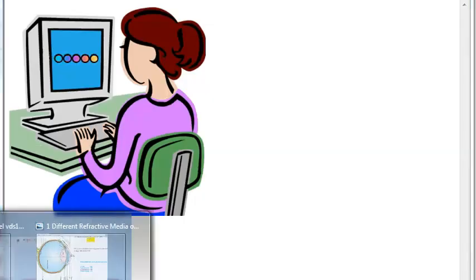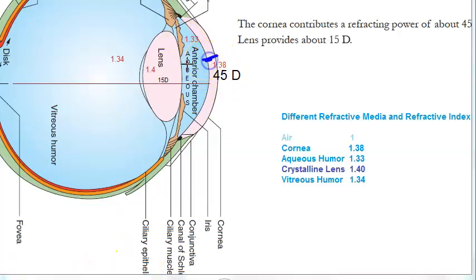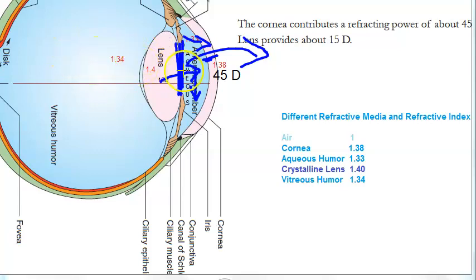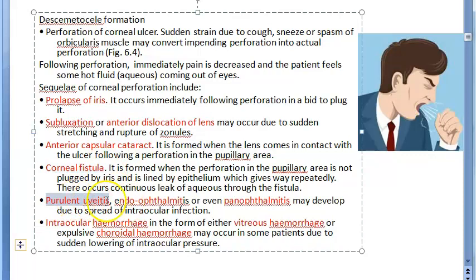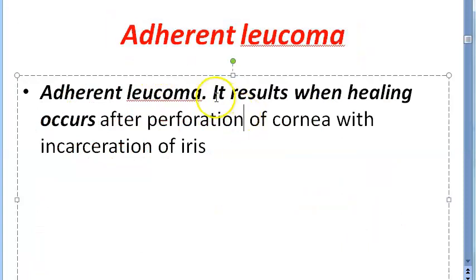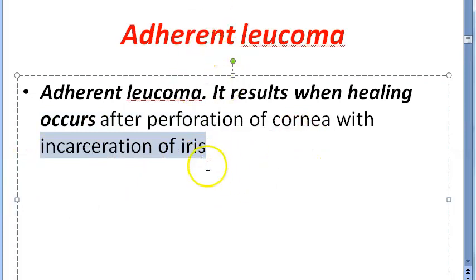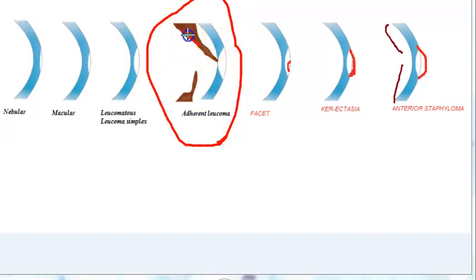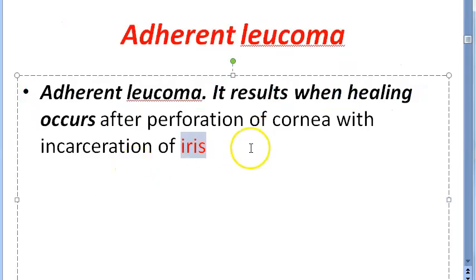Intraocular hemorrhage — in the form of vitreous hemorrhage or choroidal hemorrhage — can occur due to the sudden lowering of intraocular pressure. To summarize: aqueous humor comes out, intraocular pressure drops, iris comes forward, lens can come forward, anterior capsular cataract can happen, vitreous and choroidal hemorrhage can occur. Adherent leucoma results when healing occurs after perforation — the iris gets stuck to the cornea, as you can see in this image.